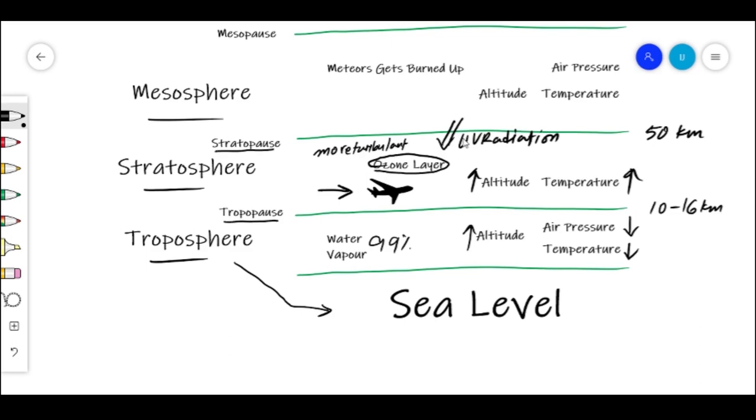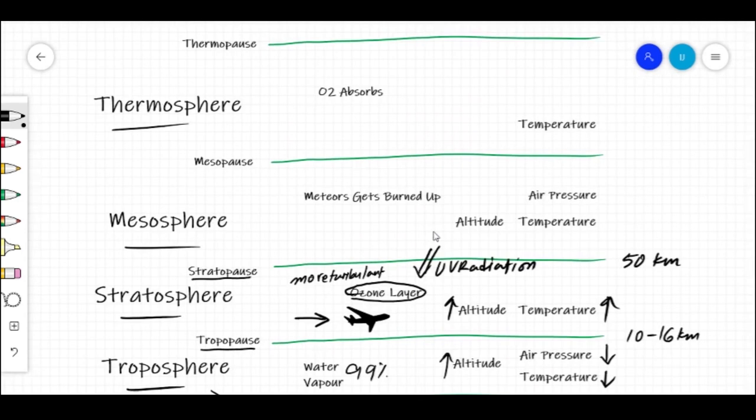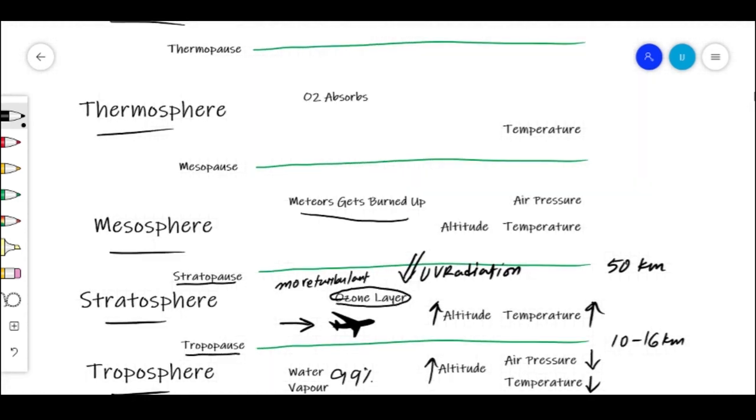The mesosphere begins right above the stratopause. Most of the meteors get burned up in this layer. The mesosphere extends up to 85 km from sea level. This is the sphere where the air pressure really starts to get thinner and thinner. Just like the troposphere, the temperature decreases with the increase in altitude. Temperatures can go down to about minus 90 degrees Celsius, and that makes this layer the coldest among all the other layers.